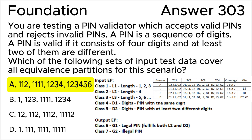Continuing answer D analysis: 11112 covers D2, L3, G2. However, D1 is not covered — a PIN that is all the same digits is not checked. Also for another option: 1 covers D1, L1, G2; 111 covers D1, L1, G2; 1111 covers D1, L2, G2; 11111 covers D1, L3, G2. But D2 and G1 are not covered — a PIN with at least two different digits and a legal PIN are not checked. Answer D is not correct.